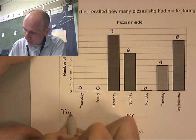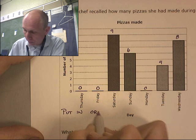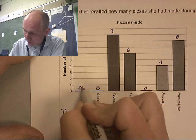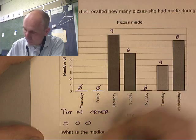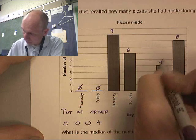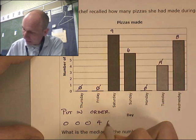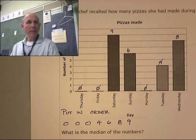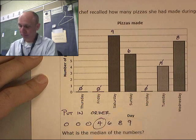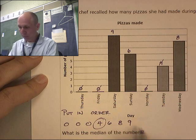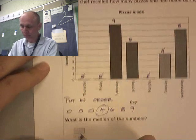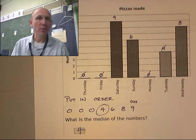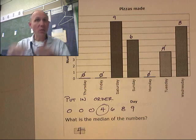Put in order. That's zero, zero, zero, four, six, eight, nine. Which number in this list is in the middle? Four. Four is in the middle. I have seven numbers and four is right there in the middle. My answer is four. To do medians, you need to put the numbers in order from small to big and then go find the middle.